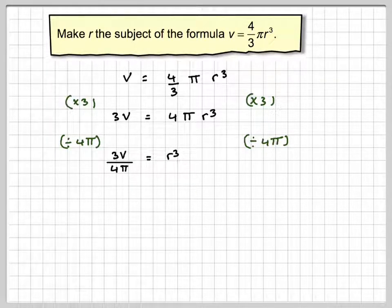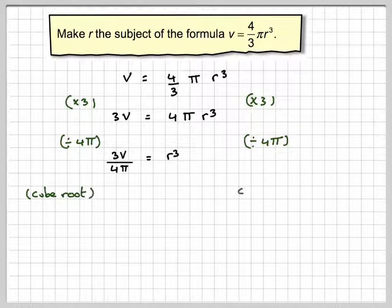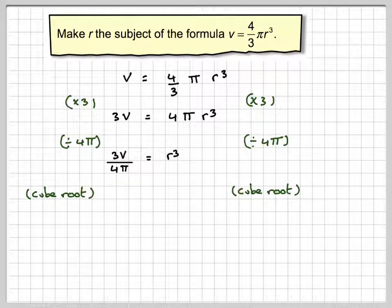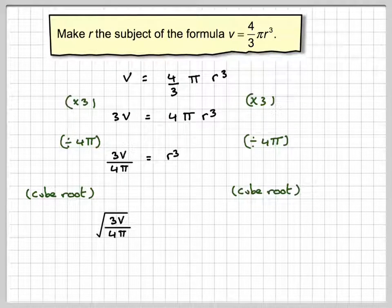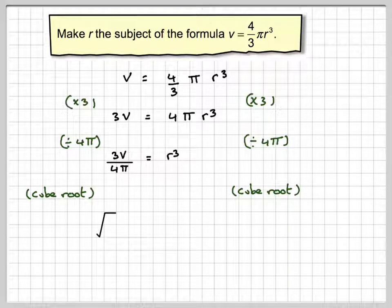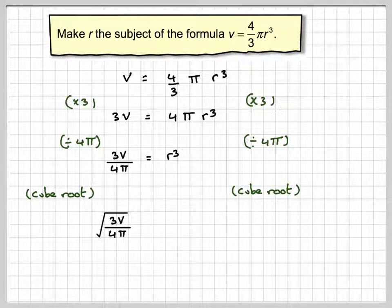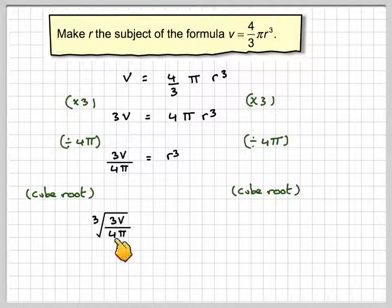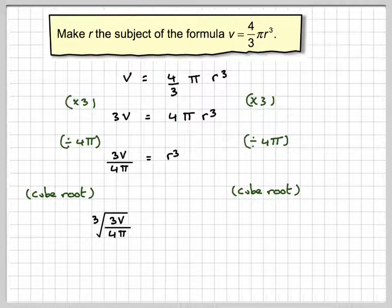We don't want R cubed, we just want R. So we need to take the cube root on both sides. The cube root of this side is the cube root of 3V over 4 pi, and the cube root of R cubed is R.